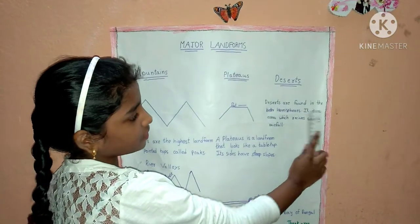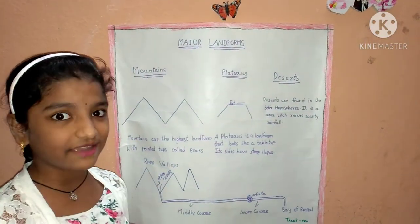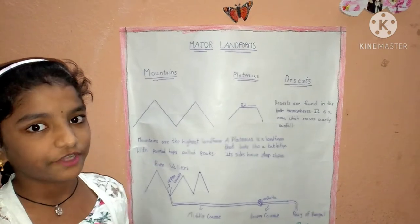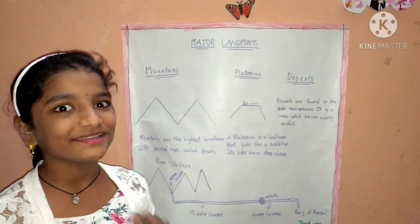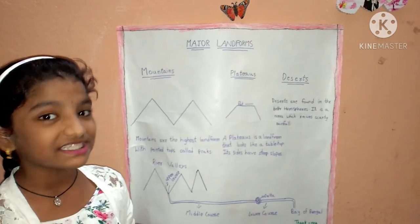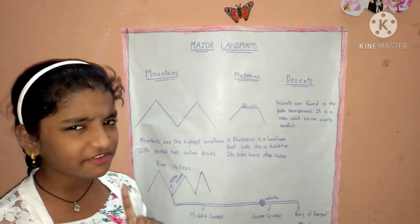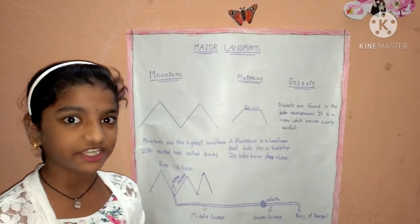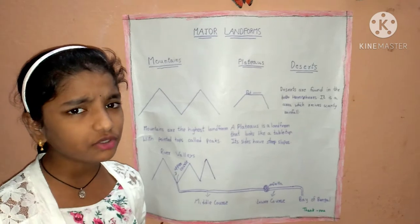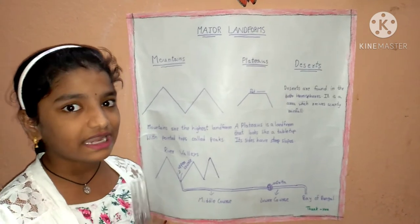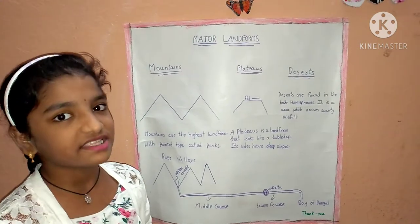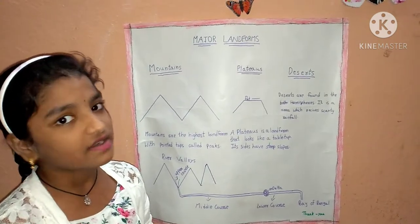Deserts are found in both hemispheres. It is an area which receives scanty rainfall. Do you know friends, there are cold deserts. The example of a cold desert is Tundra in Russia. In our country India also, there is a cold desert — the name of the cold desert is Ladakh. And there is also the Thar desert in Rajasthan.